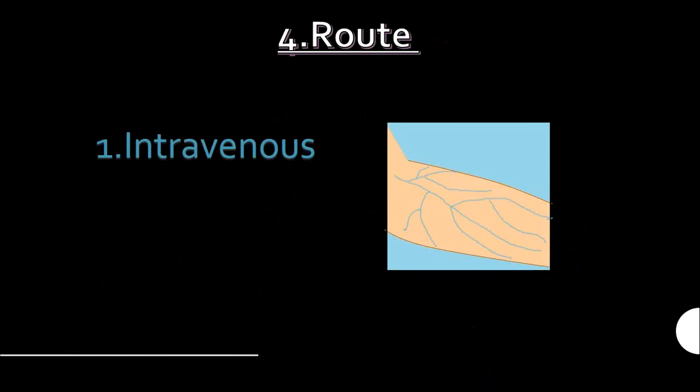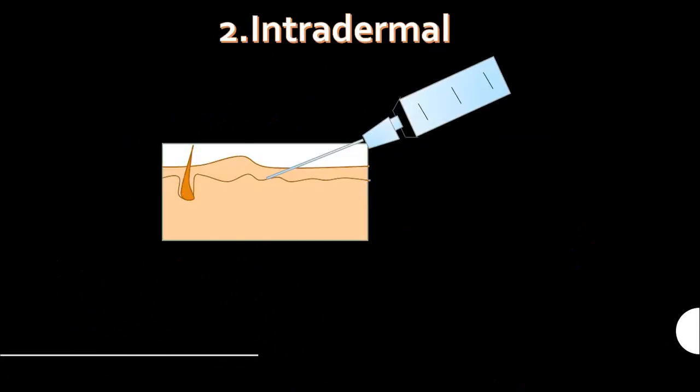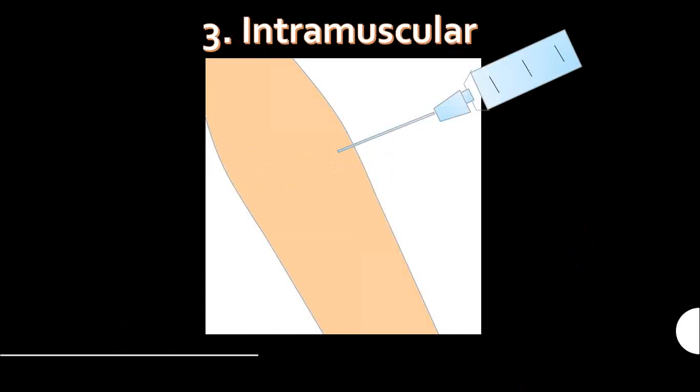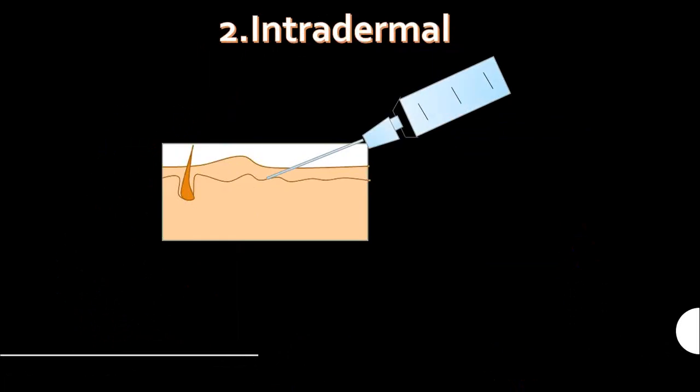The next requirement is the route, the way through which the antigen is administered. Antigen can be administered intravenously, intradermally, and intramuscularly. When administered intradermally, the antigen will elicit a strong immune response.